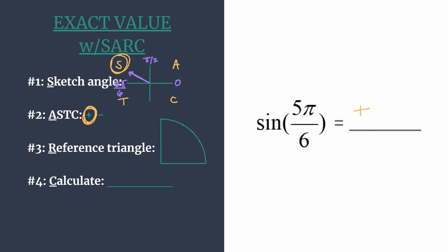So our reference triangle, we find by first running our reference angle, and that's simply the amount of rotation from our angle's terminal side to the x-axis. So here from 5π over 6 to 6π over 6, we know is just a π over 6 rotation.